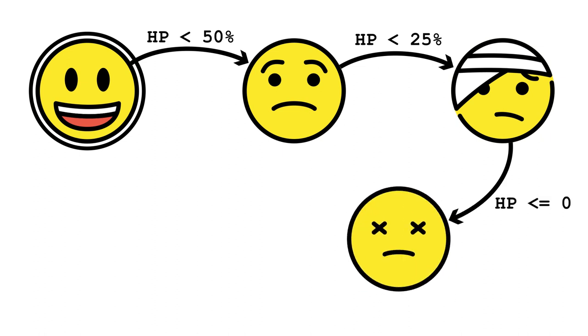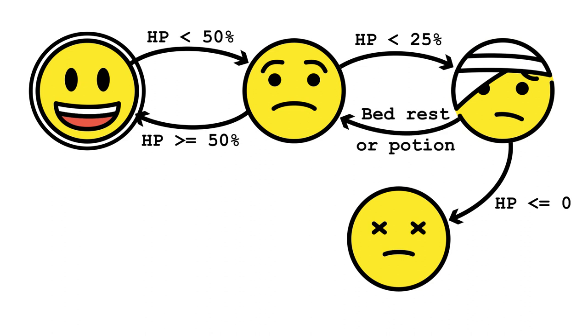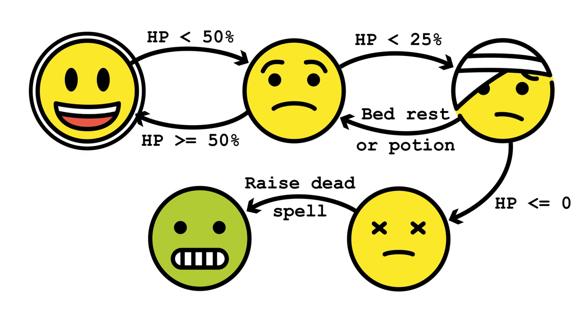If they're just injured, they can be healed normally and moved back to the healthy status when their HP is above 50% again. But if they're wounded, then only bed rest or a potion can get them back to being injured, even if their HP has otherwise recovered. And if they're dead, only a raise dead spell can change their state, and that only takes them to a new zombie state from which there is only a link back to dead. This is a trivial example, but it shows how clarifying setting something out as a state machine can be. It changes what could have been a mess of unexpected interactions into something much cleaner and more easily understood.